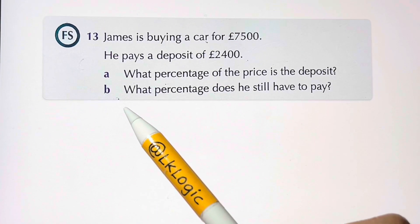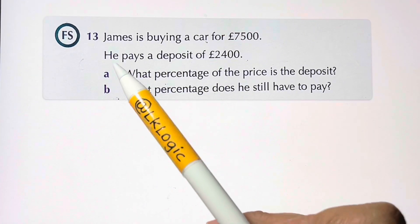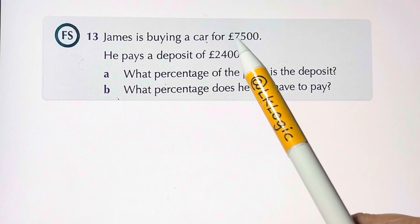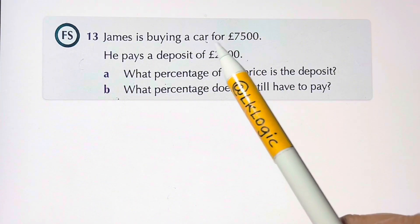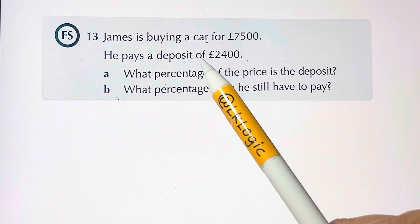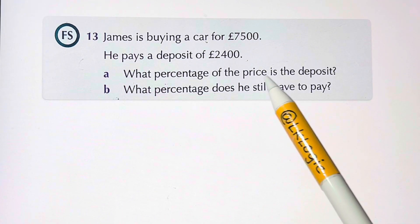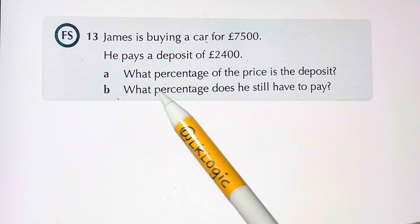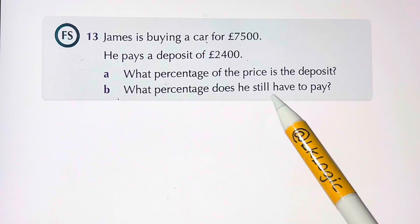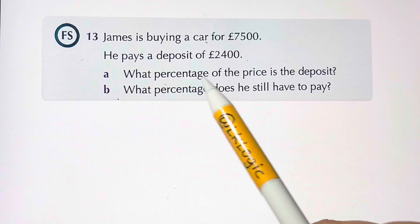In this video we're going to understand a percentage problem. James is buying a car for seven thousand five hundred pounds. He pays a deposit of two thousand four hundred pounds. What percentage of the price is the deposit, and what percentage does he still have to pay?